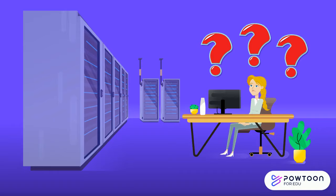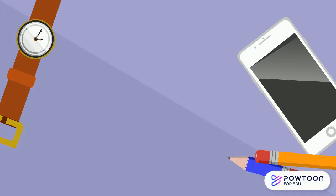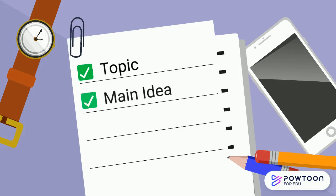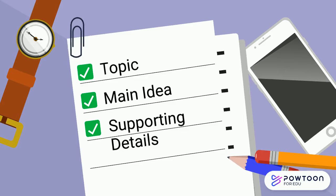So, how do you do this? In just three easy steps. First, you identify the topic. This is usually just one or two words that say what the main focus is. Then, you identify the main idea. This will be a full sentence and will state what specifically the author is trying to tell you about the topic. Then, last, you list the supporting details. Those are all the little facts and pieces of evidence that prove the author's main point.